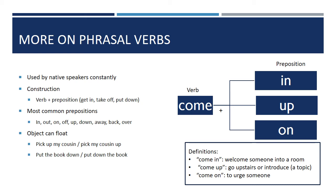Let's take a look at an example of a phrasal verb using 'come' as the main verb with various prepositions that create entirely new definitions. 'Come in' might mean to welcome someone into a room. 'Come up' means to go upstairs or, very differently, to bring up a topic — a topic can come up in conversation. 'Come on' is something you might say to urge someone to do something or to hurry up. These are just a handful of examples; many more can be found online.